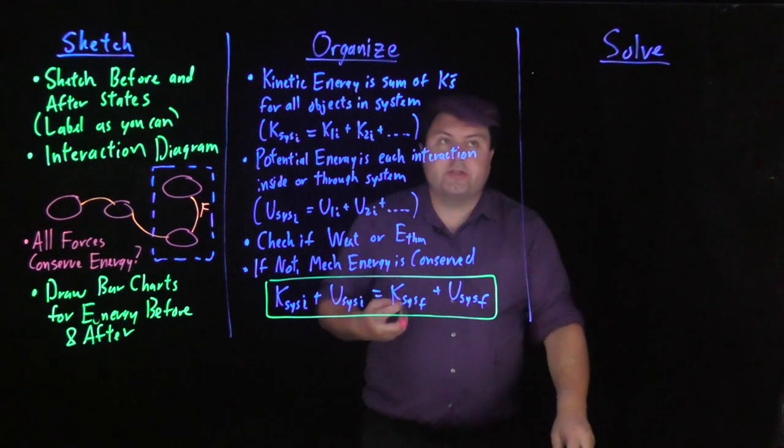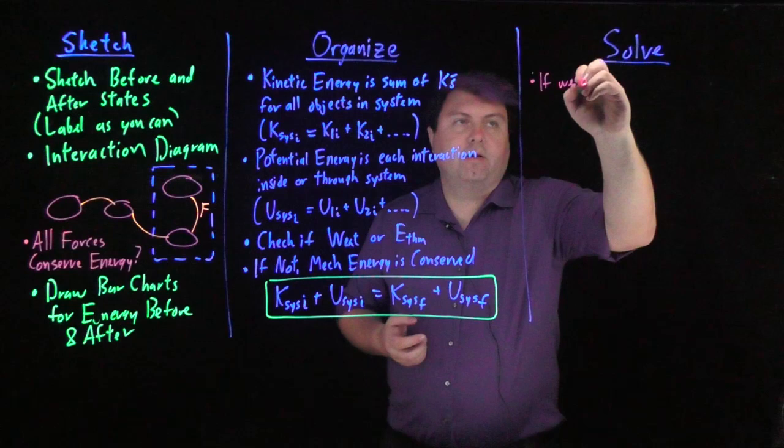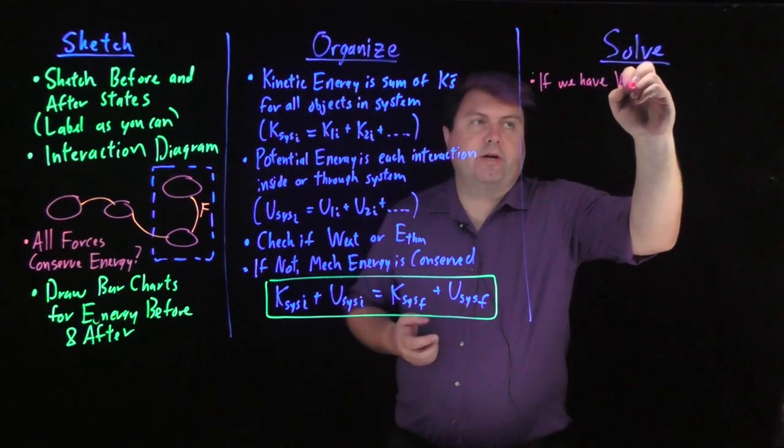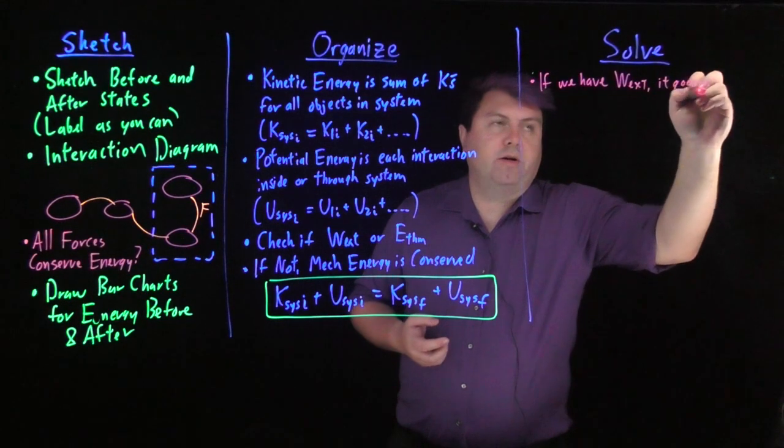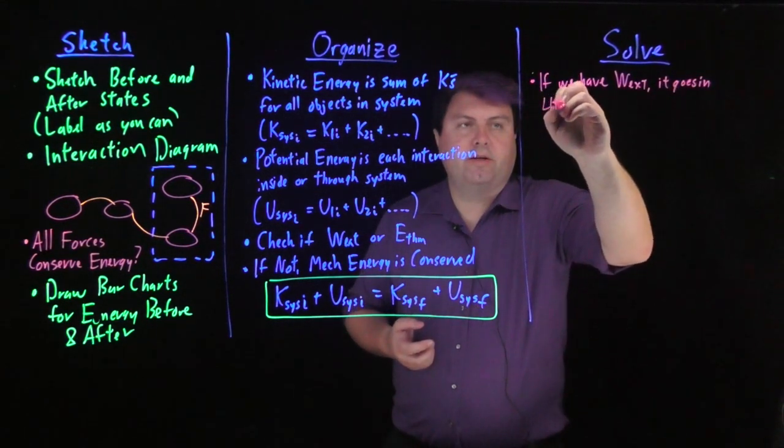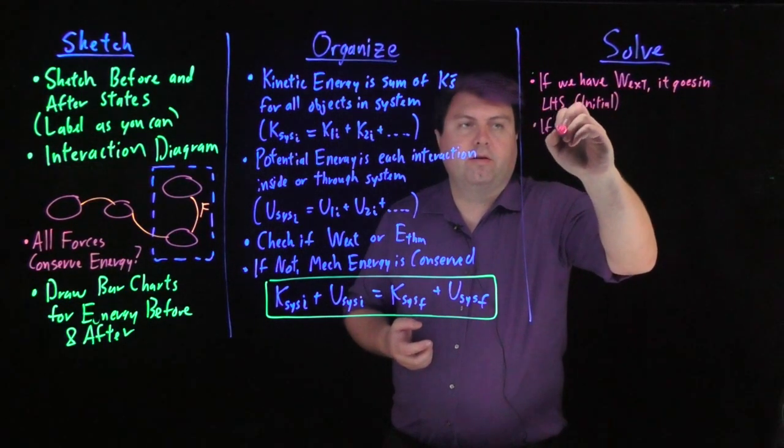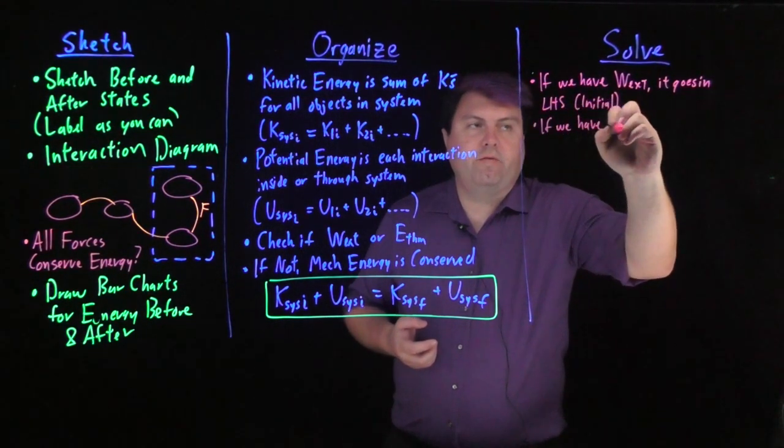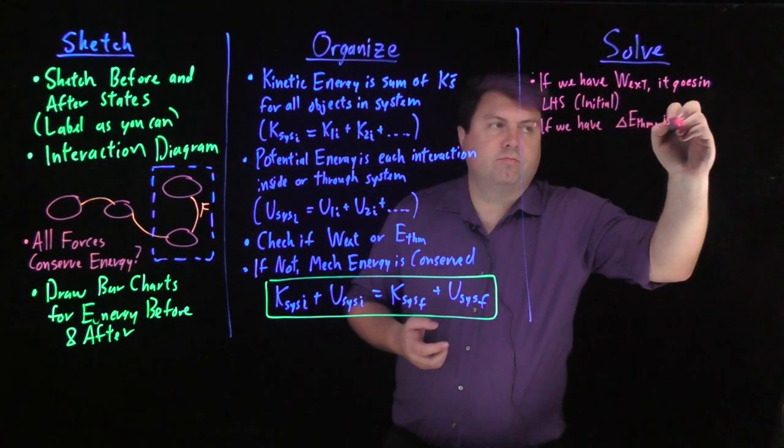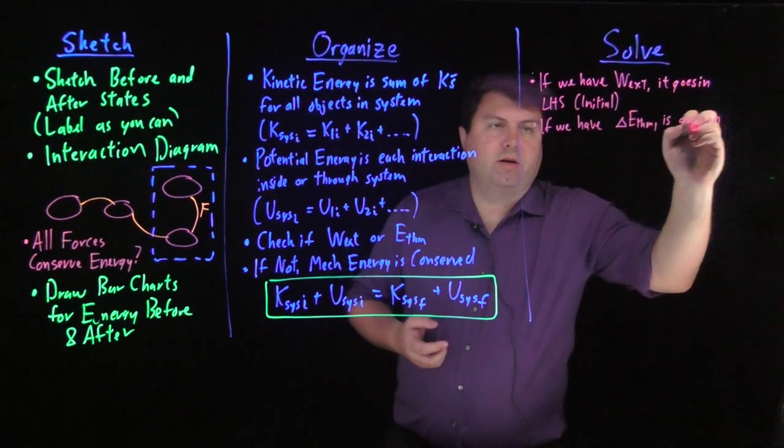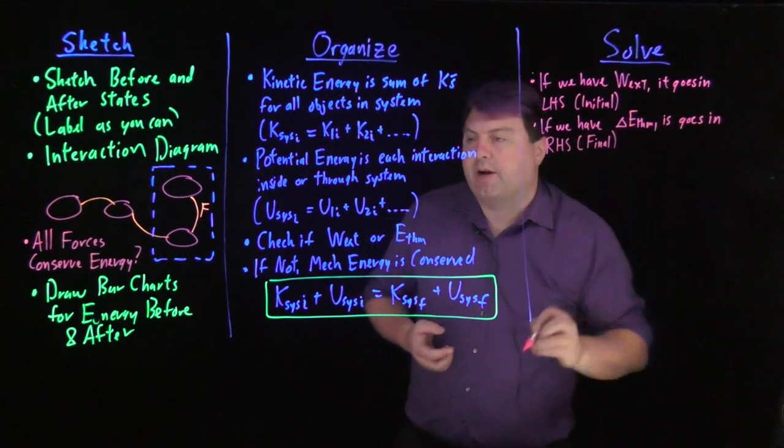As we're then solving this, if we have work external, it goes on the left-hand side or the initial side. If we have delta E thermal, it goes on the right-hand side or the final side.